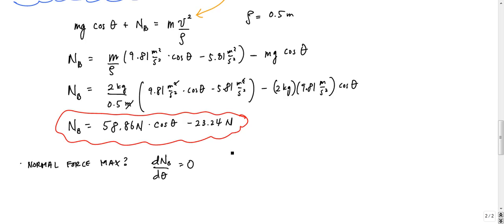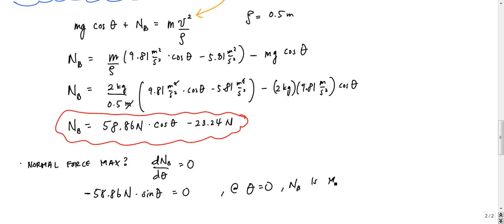If I do that, I get 58.86 Newtons times negative sine of theta — derivative of cosine is negative sine — equals zero, which tells me the normal force is max when theta equals zero. At theta equals zero, N_b is max. You can also set N_b equal to zero and solve for theta to find where the block leaves the surface.